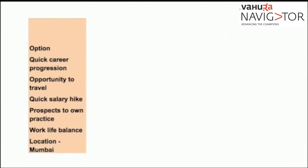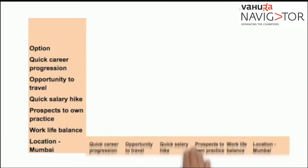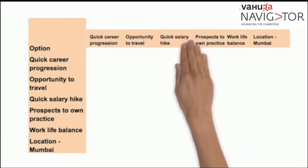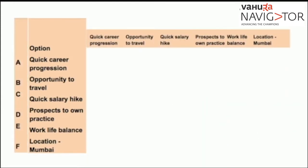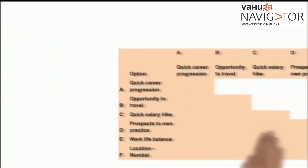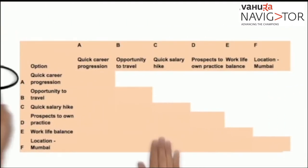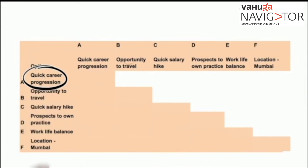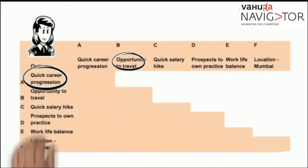The first step is to write your career expectations in the left column and the top row, and mark each expectation with an alphabet. Then you will compare the first two options and identify the option that you prefer. For example, for Reshma, having the opportunity to travel could be more important than having quick career progression.